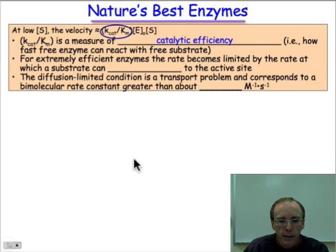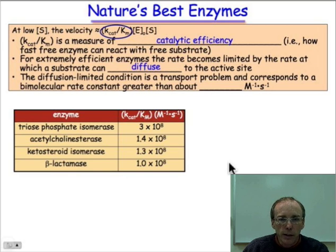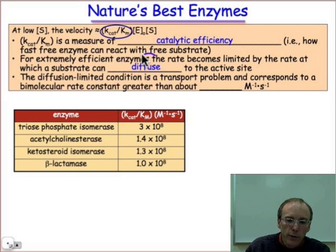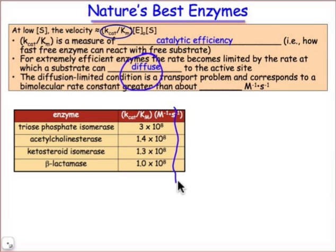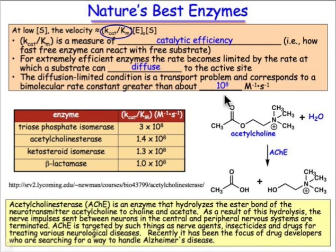We call kcat over Km the catalytic efficiency, and it has an upper limit. Ultimately, there's a limit to how efficient an enzyme can be, and that limit is determined by how fast the substrate can diffuse into the enzyme active site. So there's an upper bound to how large kcat over Km can be. For nature's very best enzymes, that value tends to be about 10 to the 8th. Beyond that, a second-order rate coefficient faster than 10^8 means the rate-limiting step is the transport of substrate to the enzyme active site — we can never achieve a rate faster than that.